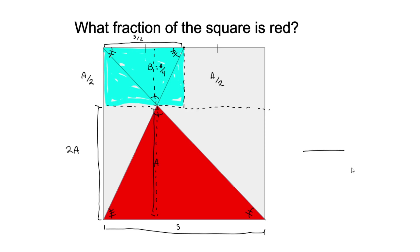So, all together, the total area of the square would be: this part is 2A, the bottom part is A, and this part is A. The bottom two-thirds, as we can see. And we know that the area of our red triangle is A. So the triangle is one-third that of the square.